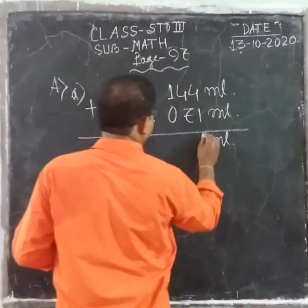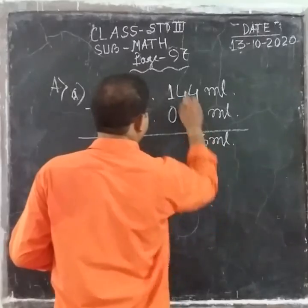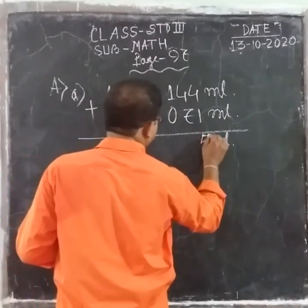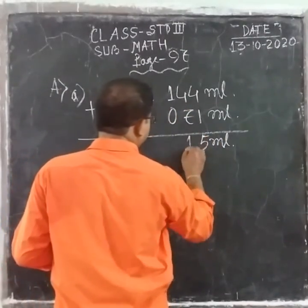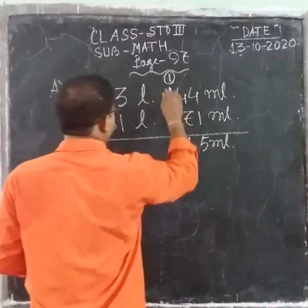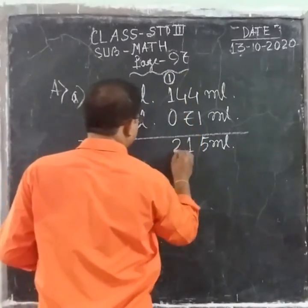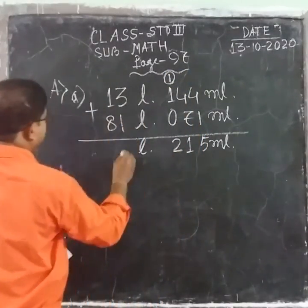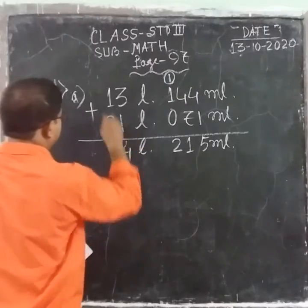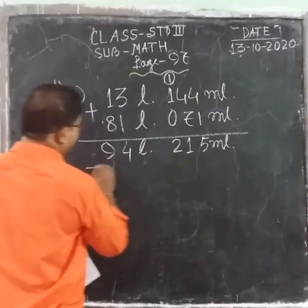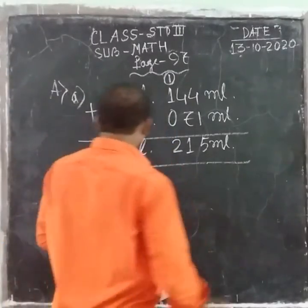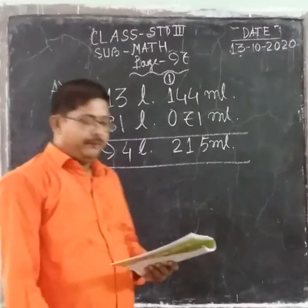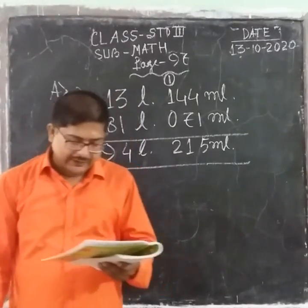4 plus 1 equals 5. 7 plus 4 equals 11 — write 1, carry 1. 1 plus 1 equals 2. Write liter here. 3 plus 1 equals 4, 8 plus 1 equals 9. So the answer is 94 liters 115 milliliters.